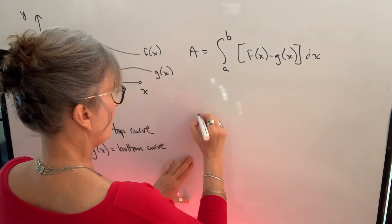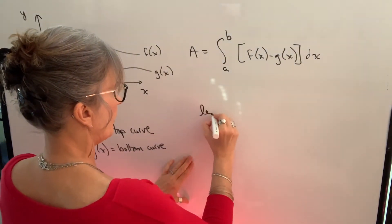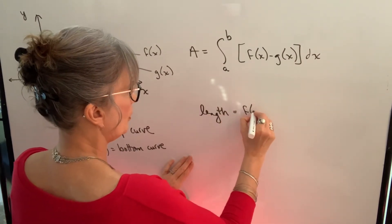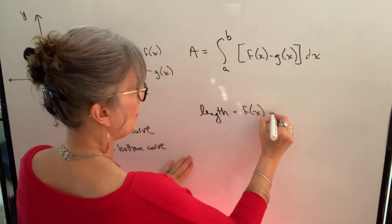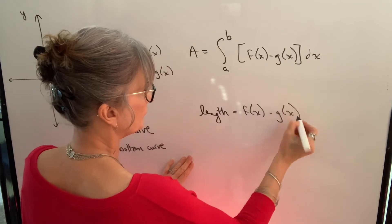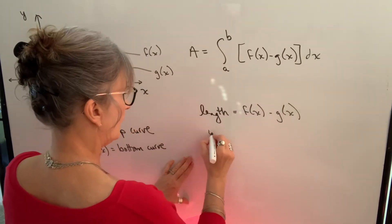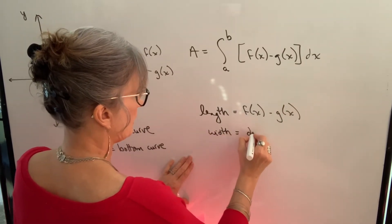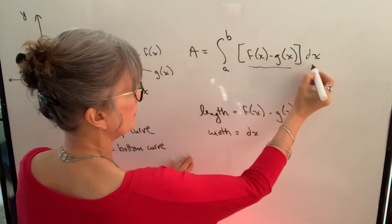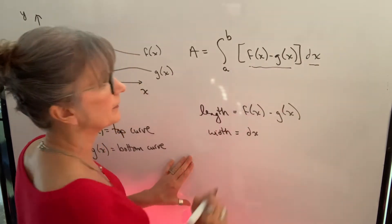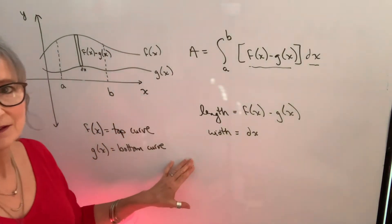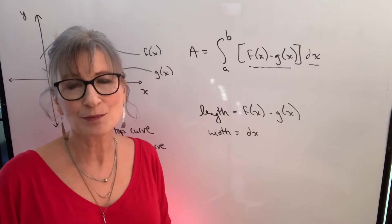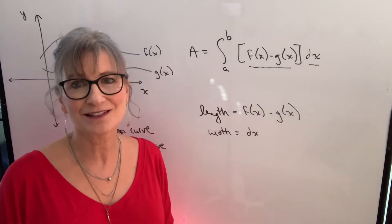The length of our rectangle will be the top curve minus the bottom curve, and the width will be dx. I think this will make more sense if we actually do examples of finding areas, so let's do that next.